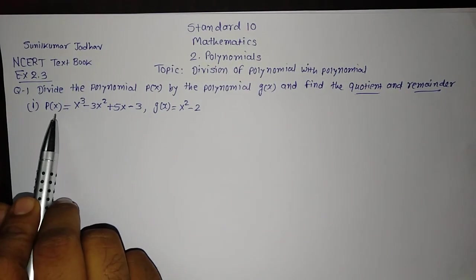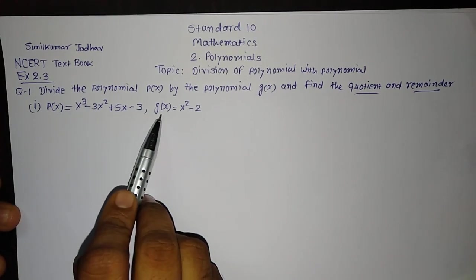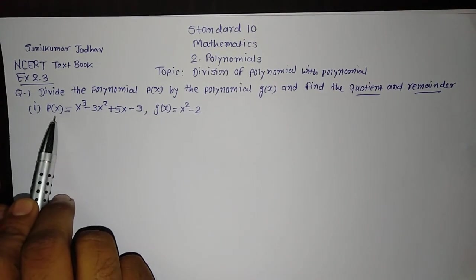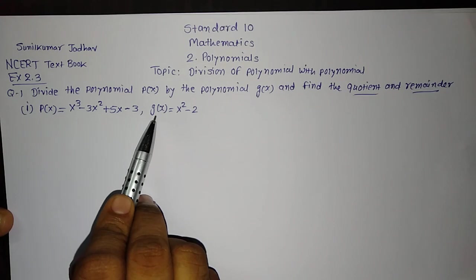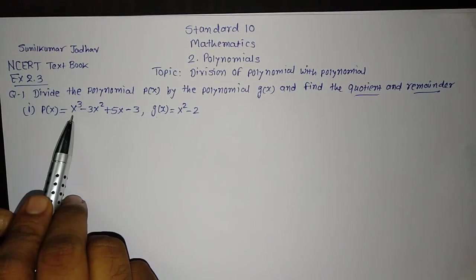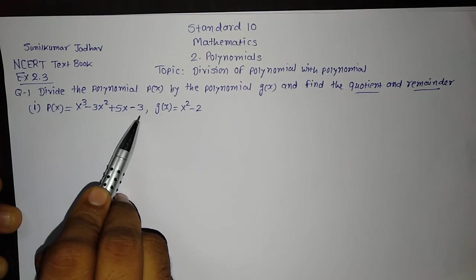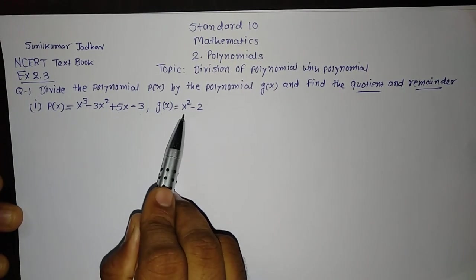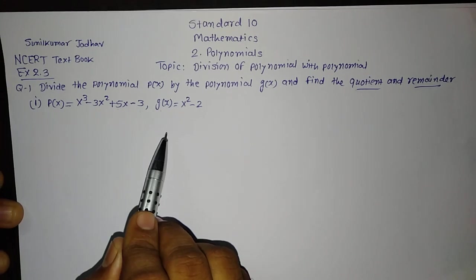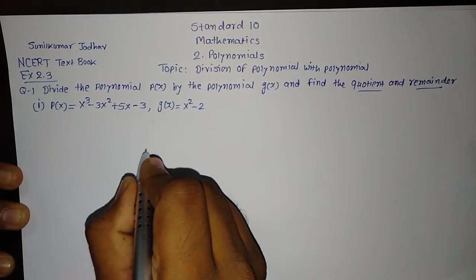Divide the Polynomial P(x) by the Polynomial G(x) and find the quotient and remainder. Now two polynomials are given, one is P(x) and another one is G(x). We have to divide P(x) by G(x). Let's start dividing, let's start division.